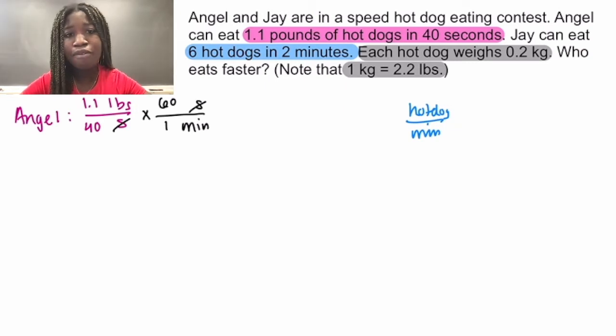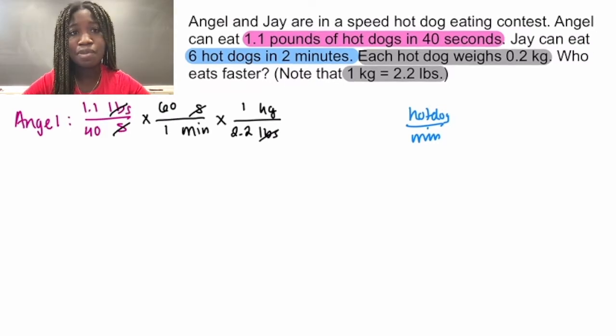Now we've used this conversion factor and we're in pounds per minute. Now if you look in the problem, there is no straight conversion from pounds to hot dogs, but there is one from kilograms to hot dogs. So therefore we need to get from pounds to kilograms. Let's put pounds at the bottom and kilograms on top. From our note, we see that 1 kilogram equals 2.2 pounds. So the pounds can cancel and we are in kilograms per minute.